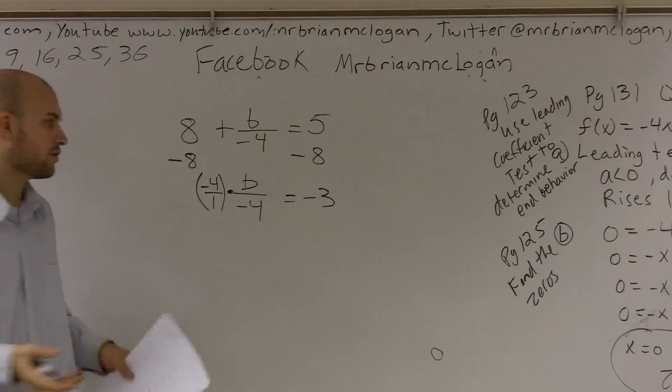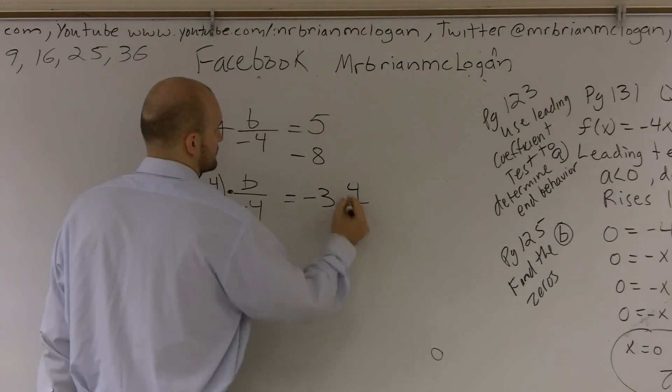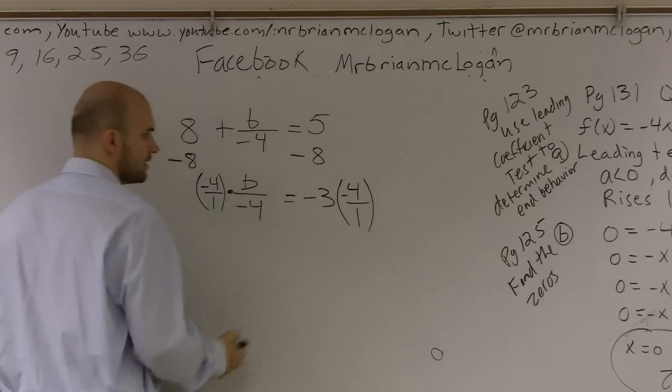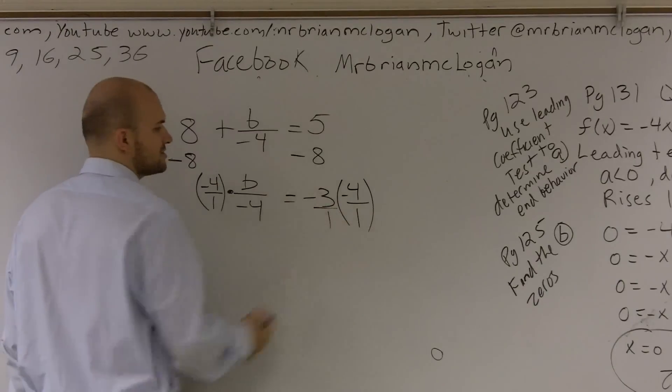So I can just write negative 4 over 1 as my fraction. All right? So multiply a whole number times a fraction - just change it to a fraction. You multiply across. This becomes negative 3 times negative 12.